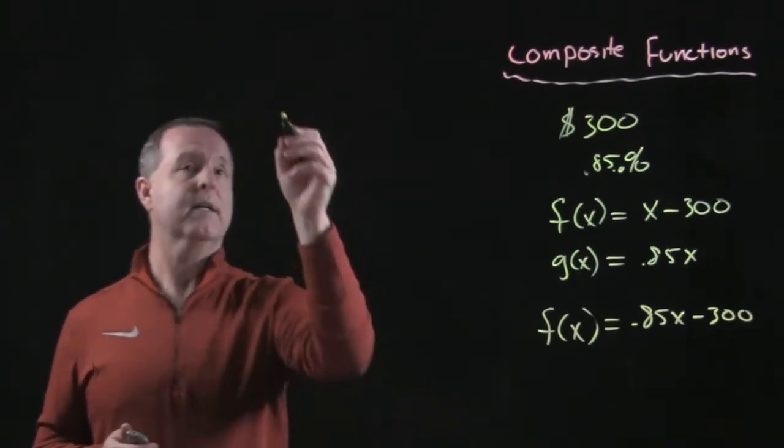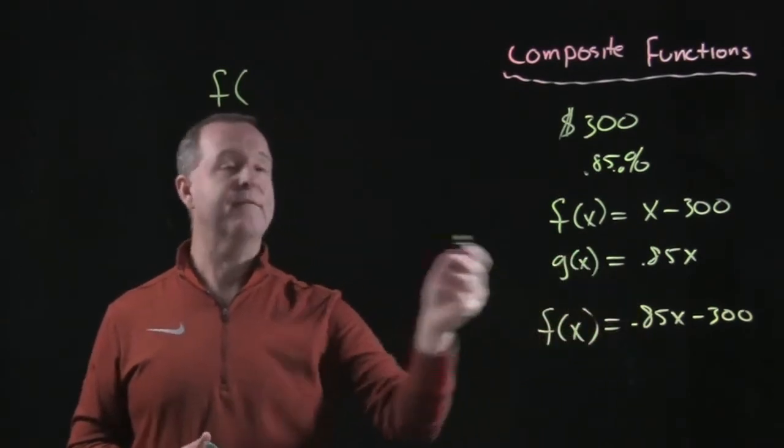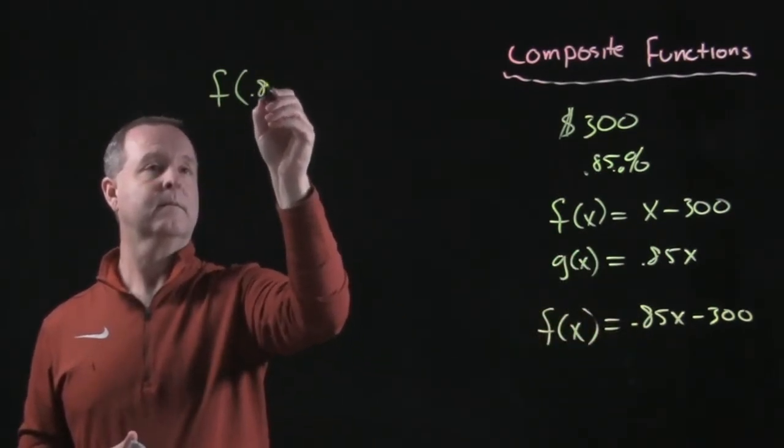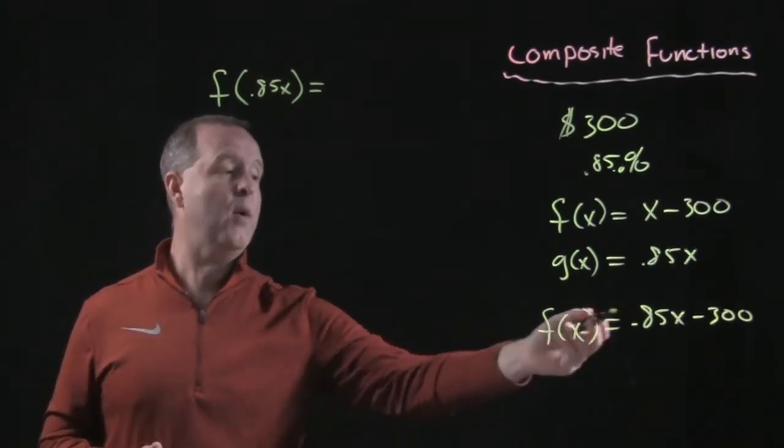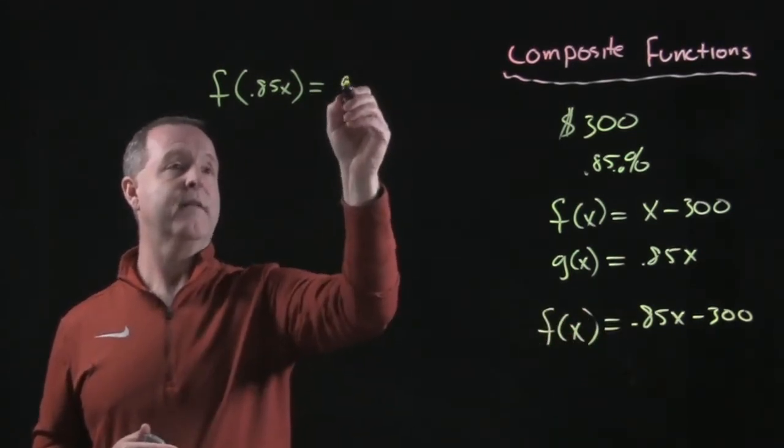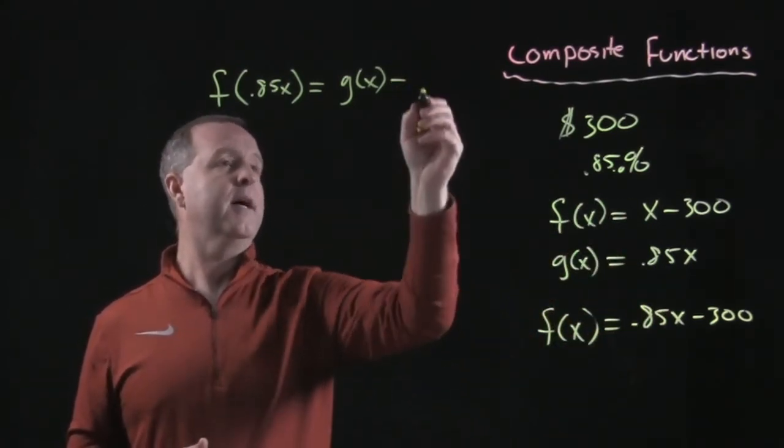So one way to look at this could be f of .85x. That .85x is g of x, which is .85x minus 300.